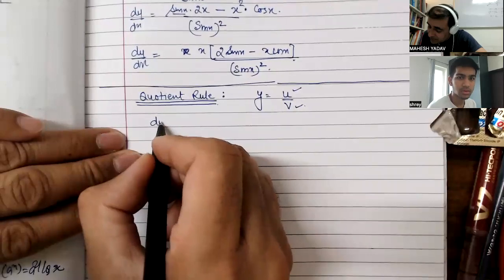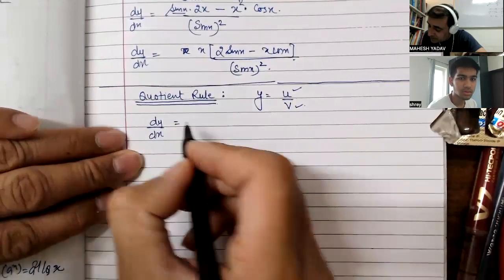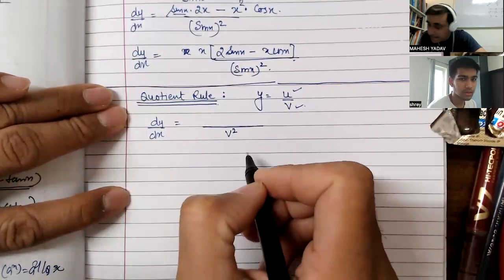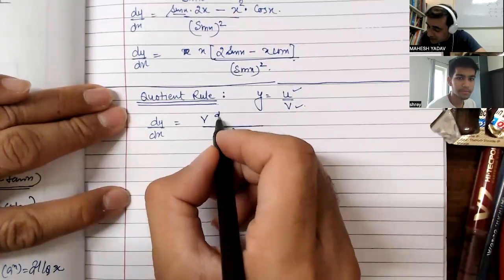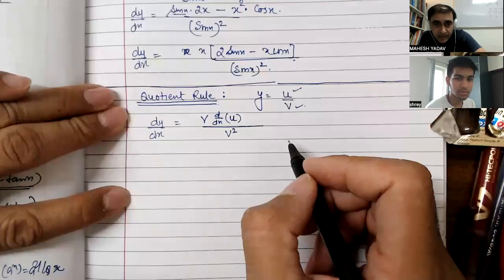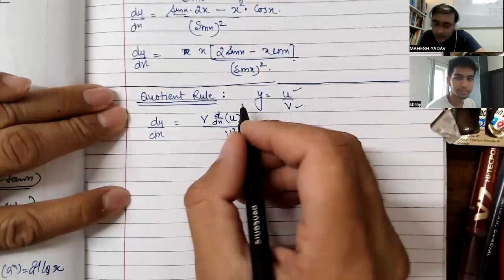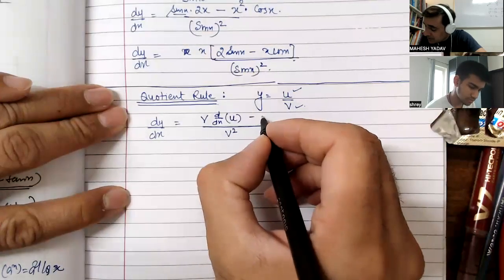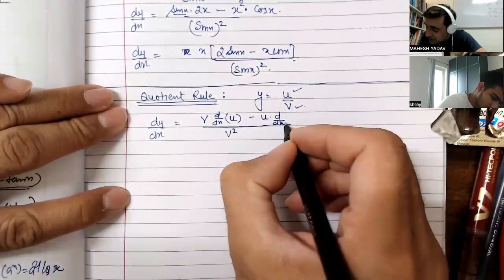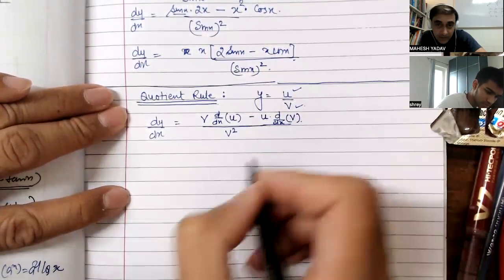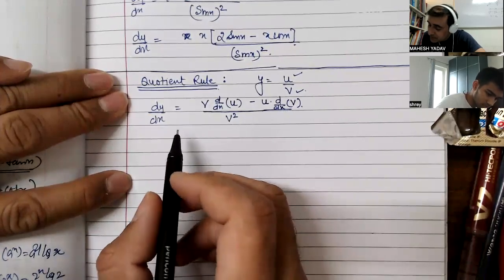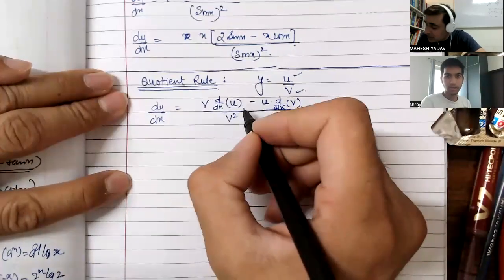This derivative will be: dy by dx is equal to denominator whole square. The denominator as it is remains, then the derivative of the numerator — dy/dx of numerator — minus the numerator as it is, then dy/dx of the denominator. Denominator whole square.